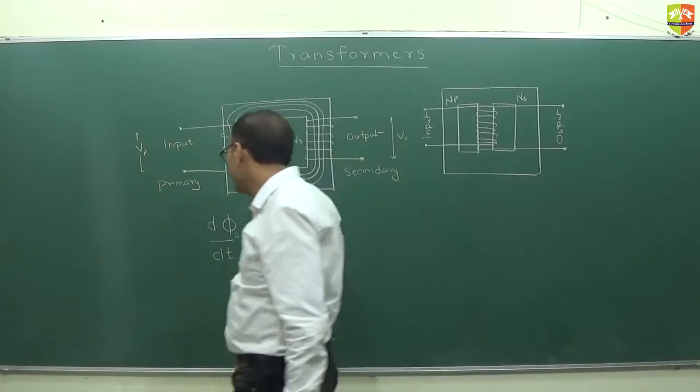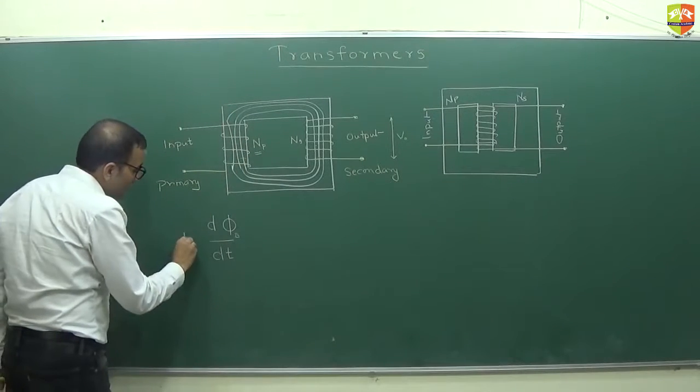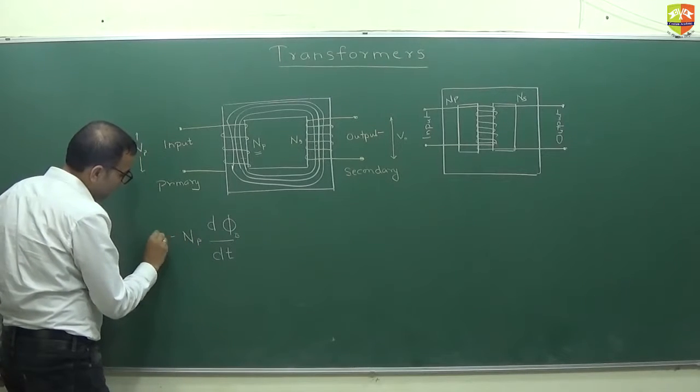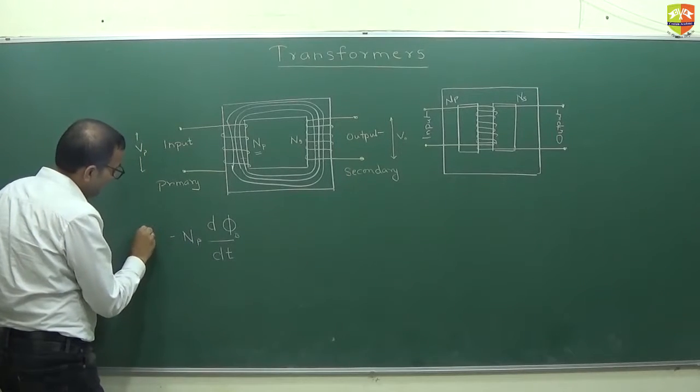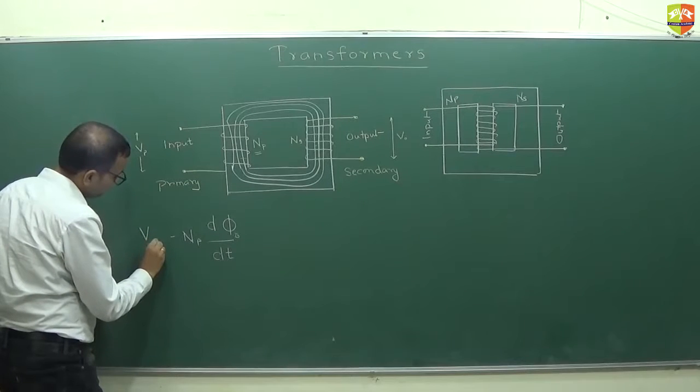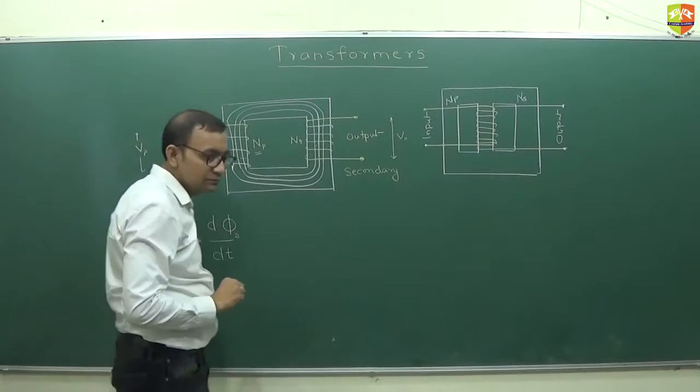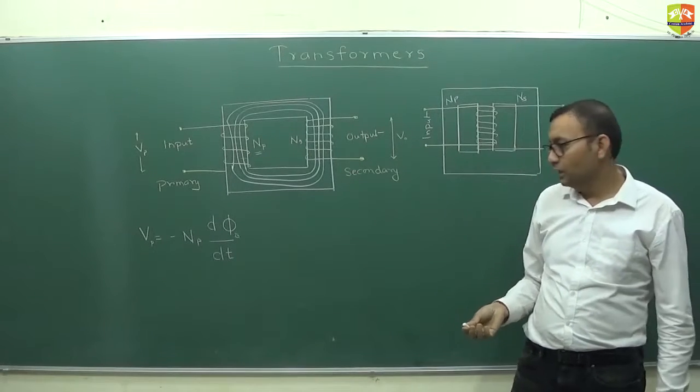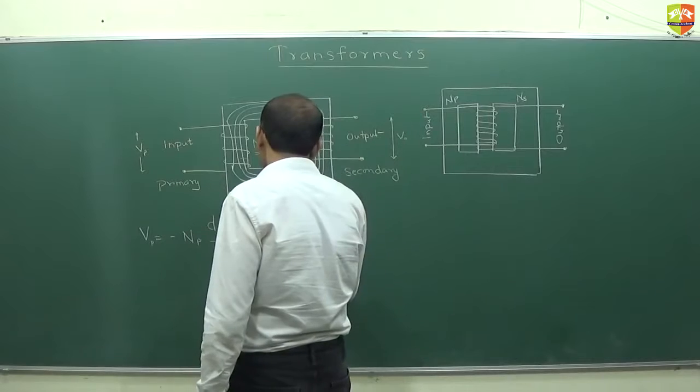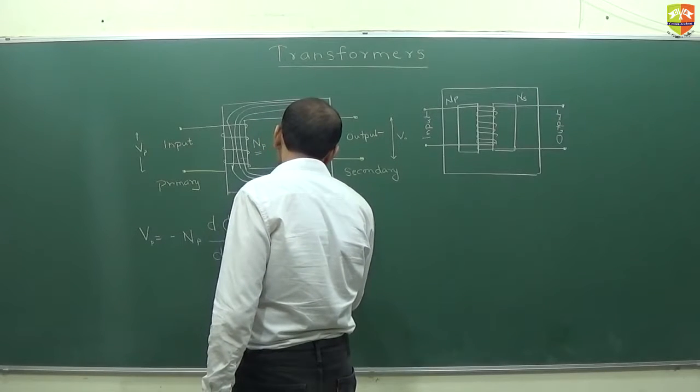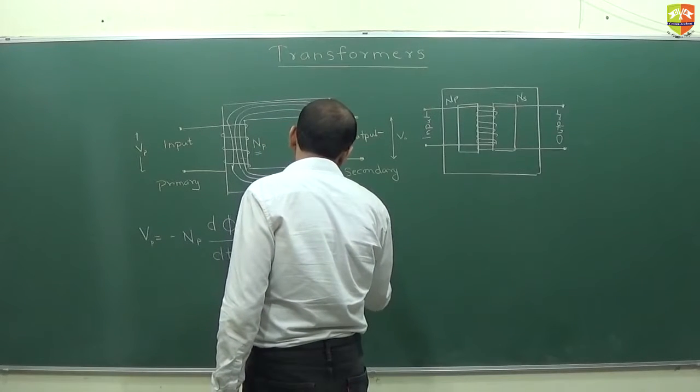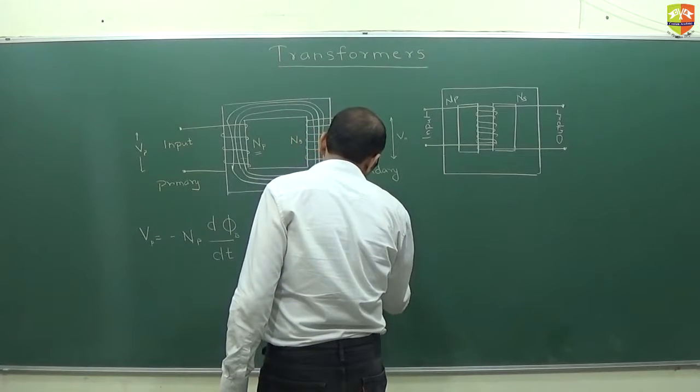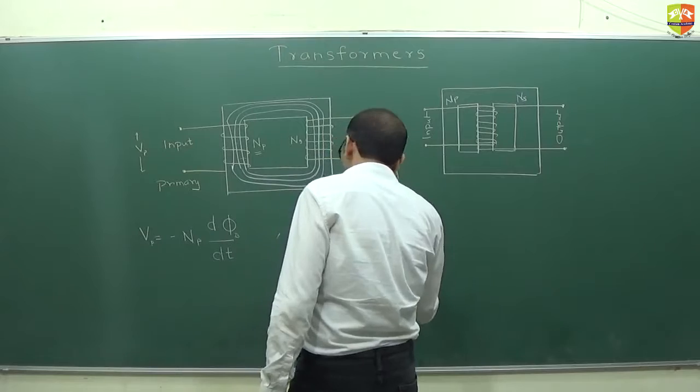Depending on number of turns, suppose here the number of turns is NP. So NP into this, minus of that, will be what? Input voltage or primary voltage. That's how it should be. Rate of change of flux should be the voltage. And secondary side, what should be the voltage? Minus NS d phi B by dt. Any doubt on this?